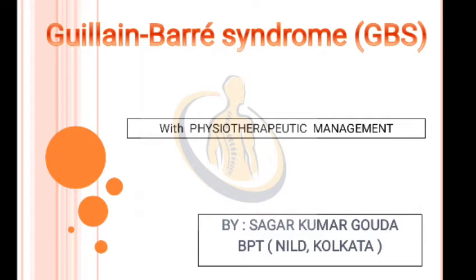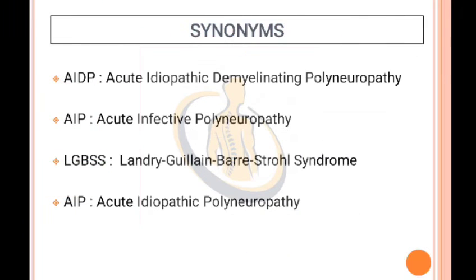Guillain-Barré Syndrome. Synonyms: AIDP – Acute Idiopathic Demyelinating Polyneuropathy; AIP – Acute Infective Polyneuropathy; LGBSS – Landry-Guillain-Barré-Strohl Syndrome; AIP – Acute Idiopathic Polyneuropathy.